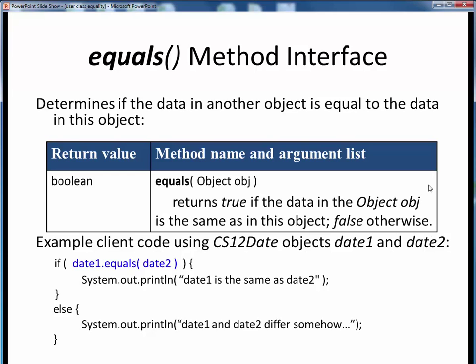First, here is the standard interface for the equals method. And when I say standard, I mean that every Java class that implements this will use this common generic form. The equals method determines whether the data in one object is equivalent to the data in another object.